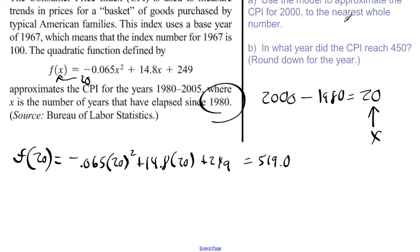Then you're going to get a decimal answer of 519.0. We're rounding to the nearest whole number, so 519. That right there is going to be our CPI, so that would be the answer for part A.